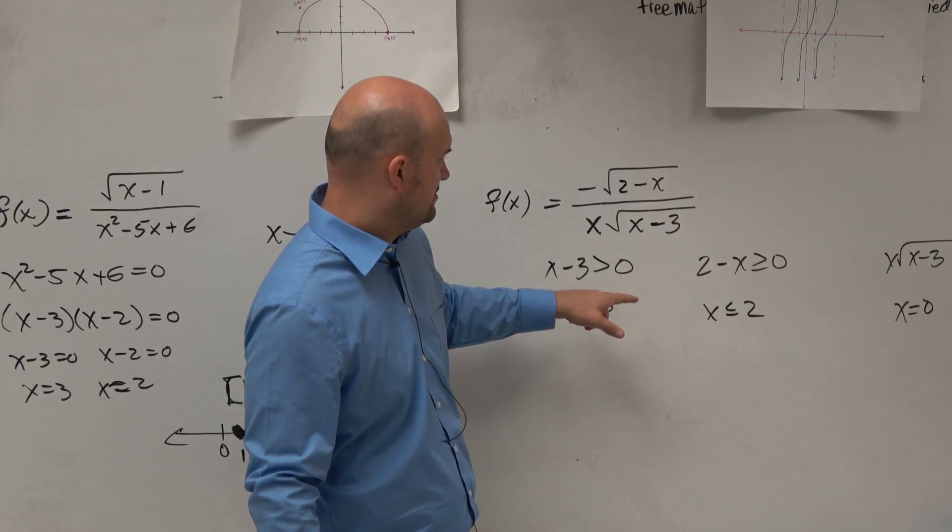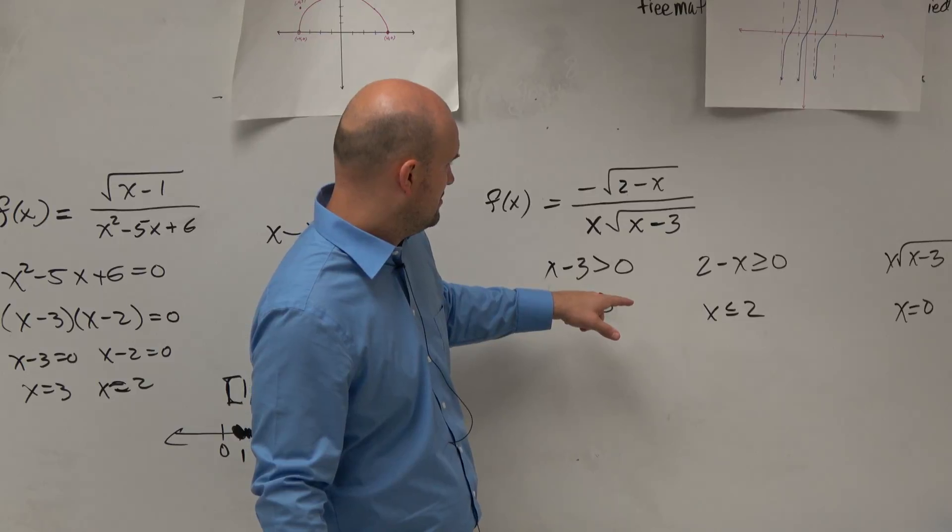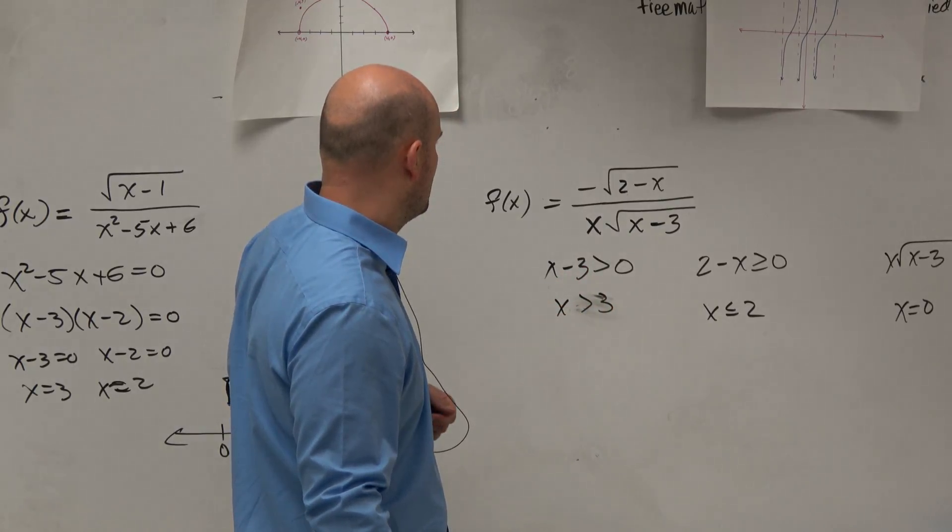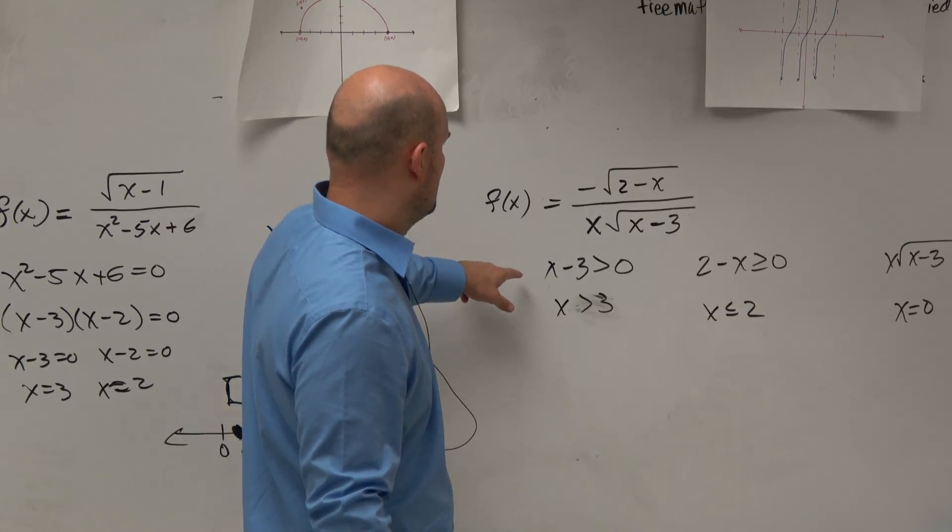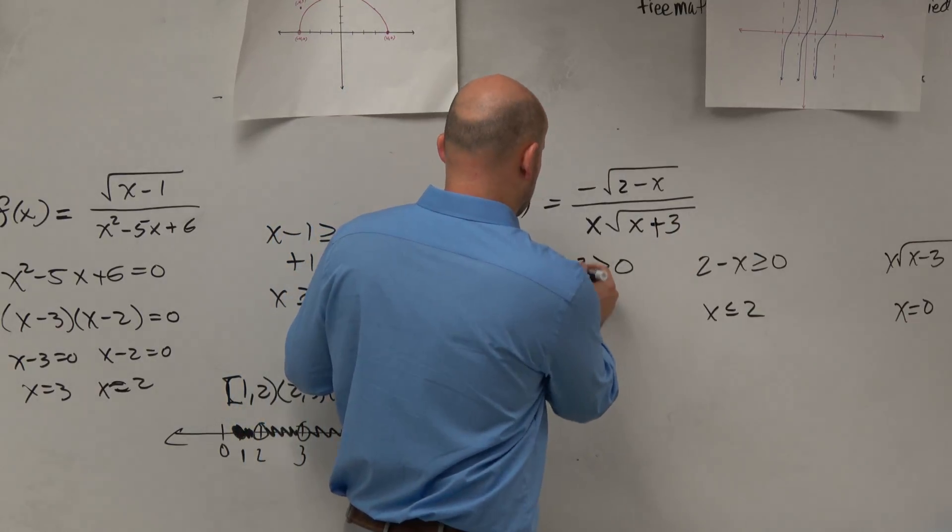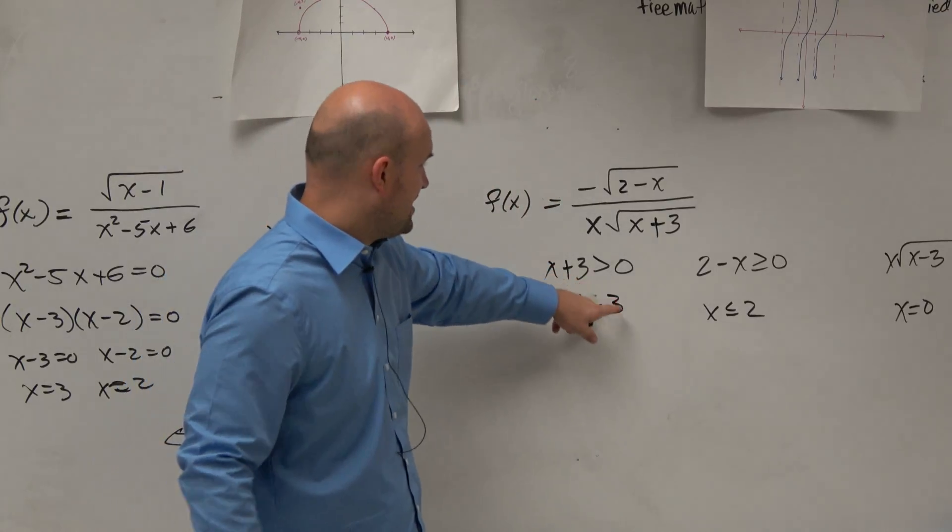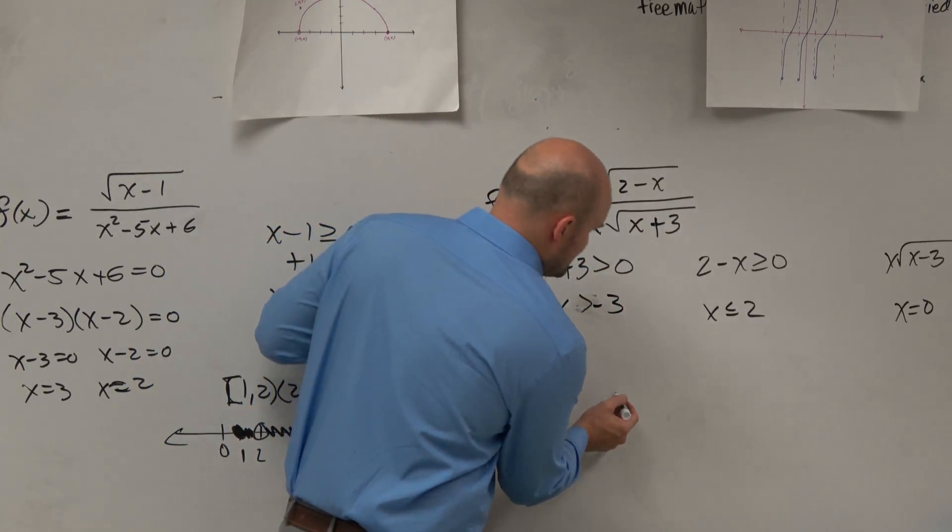Oh, did I pick the wrong numbers? Dang it. Sorry. That was supposed to be a negative. x has to be greater than negative 3, less than 2. There we go. Sorry about that.